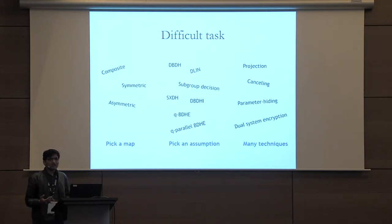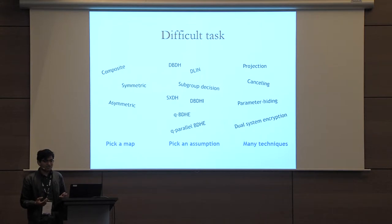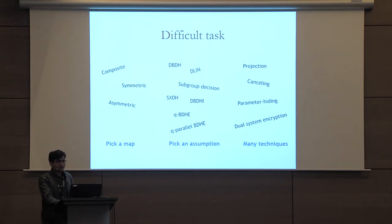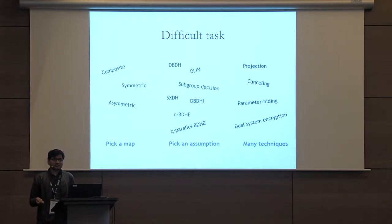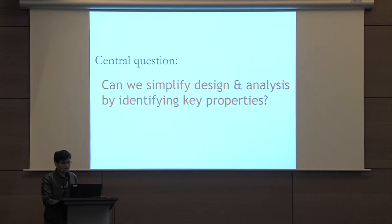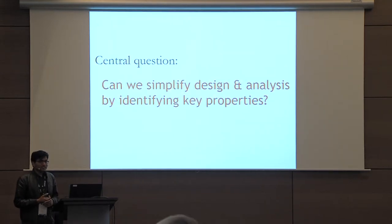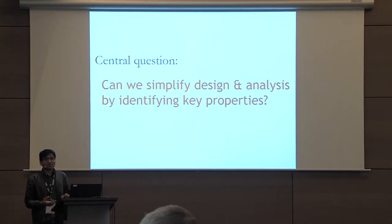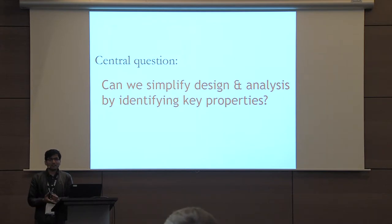The task of building a predicate encryption scheme from bilinear maps is not an easy one. There are several choices for the map, there are different types of assumptions, and there are many different techniques that one needs to be familiar with. So the main question we ask in this paper is: how can we simplify the design and analysis of predicate encryption schemes?